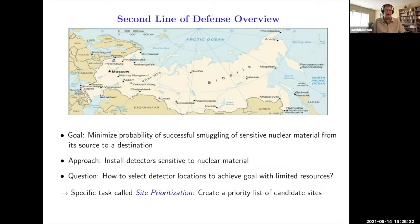Sensitive material is highly enriched uranium or plutonium. The approach was that radiation detectors were installed at border crossings, whether they're land border crossings or seaports or airports, leaving Russia. The question was how do we select detector locations to achieve this goal of minimizing the probability of a successful smuggling attempt? The task was called site prioritization. The Department of Energy said we want a priority list for these sites. In the upcoming fiscal year, where should we be installing radiation detectors?